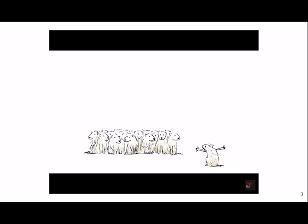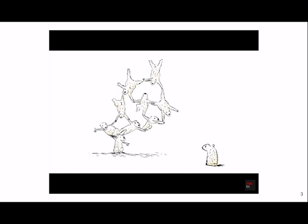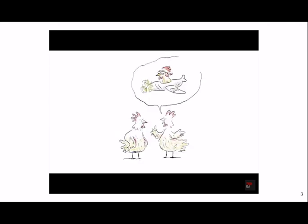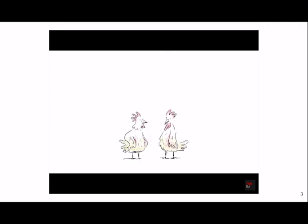Productivity is the ability to use language to create an infinite number of messages. Displacement is the ability to talk about things that aren't right in front of you — such as past, future, or fictional events. Does animal communication exhibit any of these qualities?